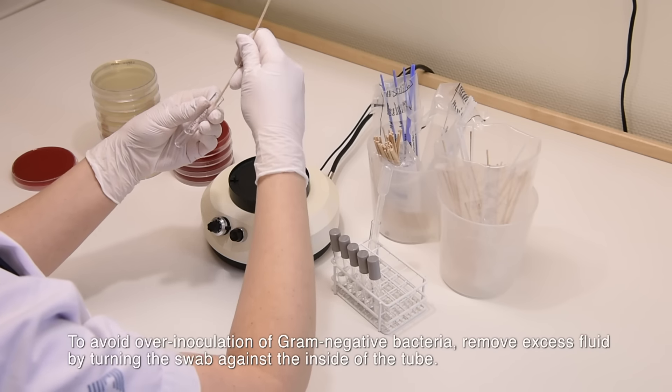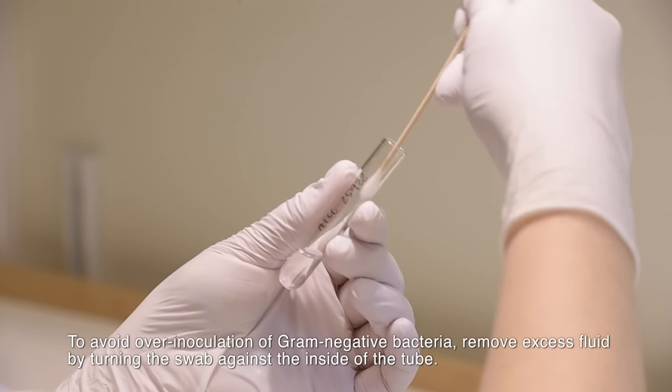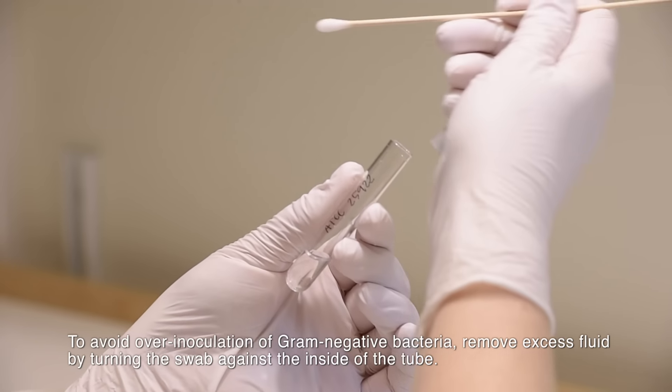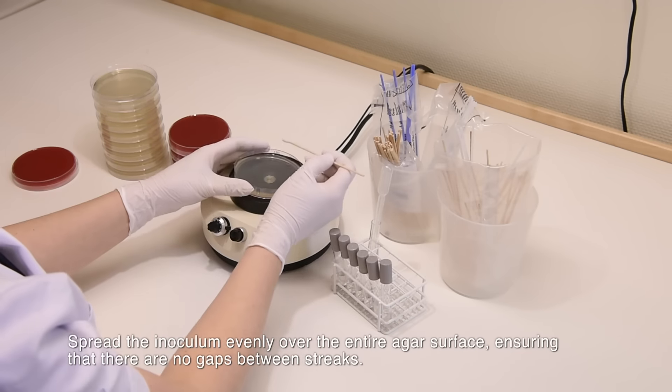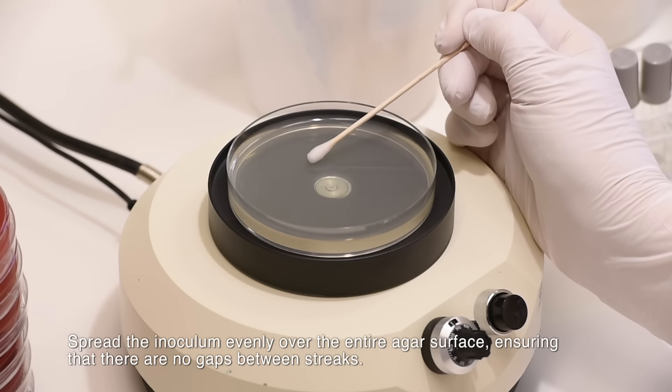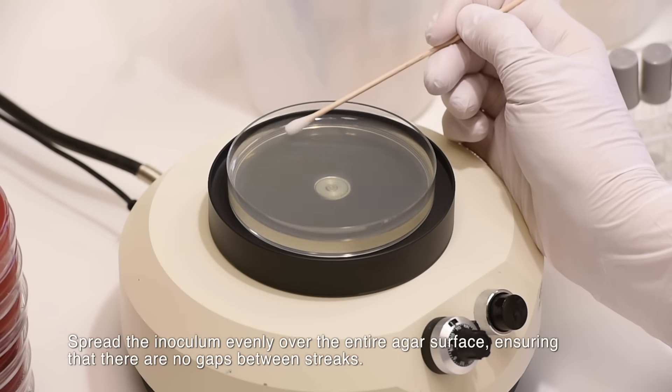To avoid over-inoculation of gram-negative bacteria, remove excess fluid by turning the swab against the inside of the tube. Spread the inoculum evenly over the entire agar surface, ensuring that there are no gaps between streaks.